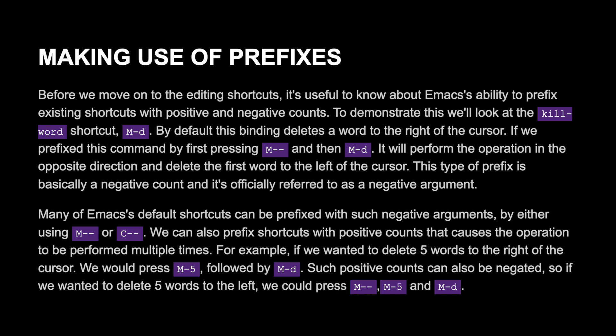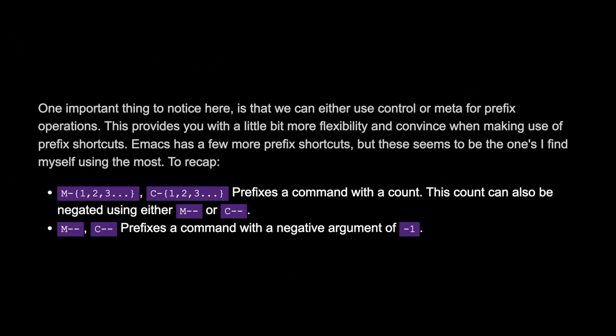We can also prefix shortcuts with positive counts that cause the operation to be performed multiple times. For example, to delete five words to the right of the cursor, press Meta+5 followed by Meta+D. Such positive counts can also be negated — to delete five words to the left, press Meta+- Meta+5 and Meta+D. Note that we can use either Ctrl or Meta for prefix operations, providing more flexibility. To recap: Meta or Ctrl followed by a number prefixes a command with a count; this count can be negated using Meta+- or Ctrl+-; and Meta+- or Ctrl+- alone prefixes a command with a negative argument of negative one.